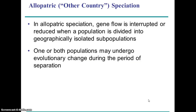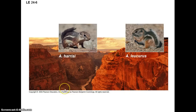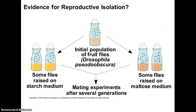Allopatric speciation involves geographic isolation. It's not too hard to imagine how two different populations can develop into separate species if they're isolated long enough — like these ground squirrels that are basically isolated from each other by the Grand Canyon. They're not going to get together to mate, and so over time they develop into two separate species.